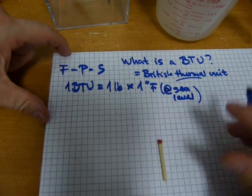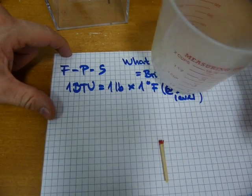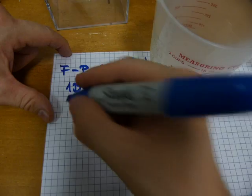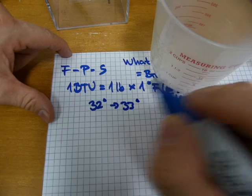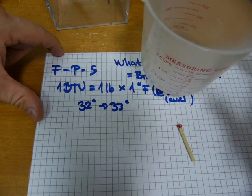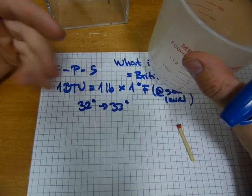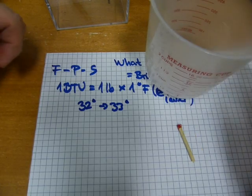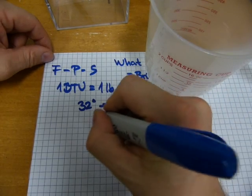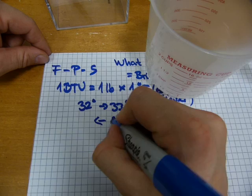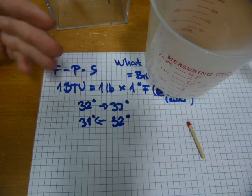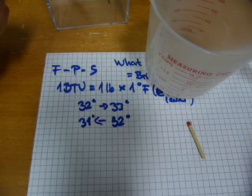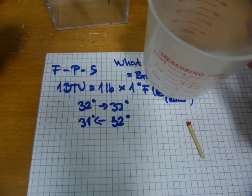If in this measuring cup, the temperature of the water goes up from 32 degrees to 33 degrees, then one unit of heat was transferred to the water. It works the other way around as well. If the temperature drops from 32 degrees to 31 degrees, then one BTU amount of heat was removed from the pound of water.